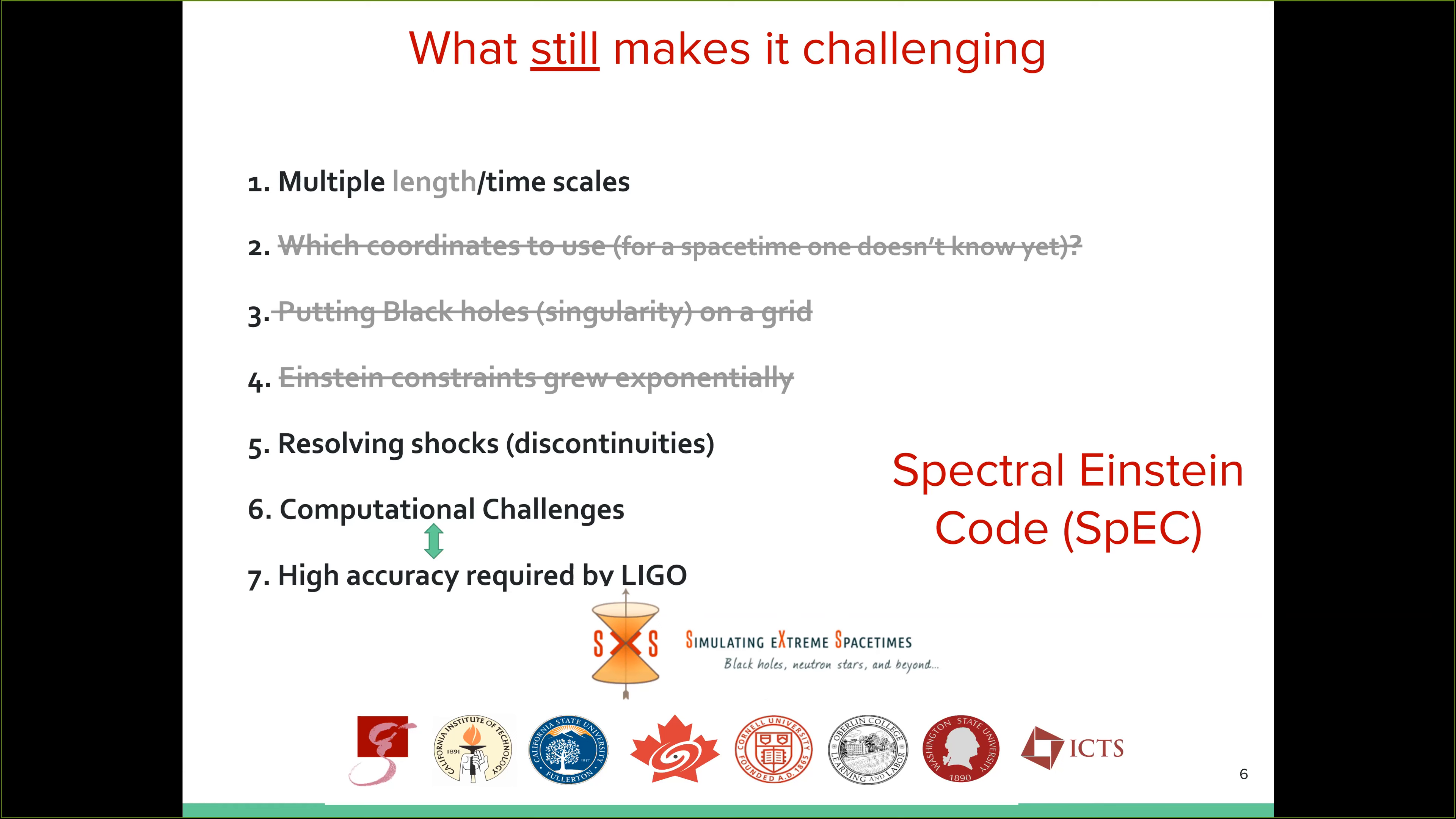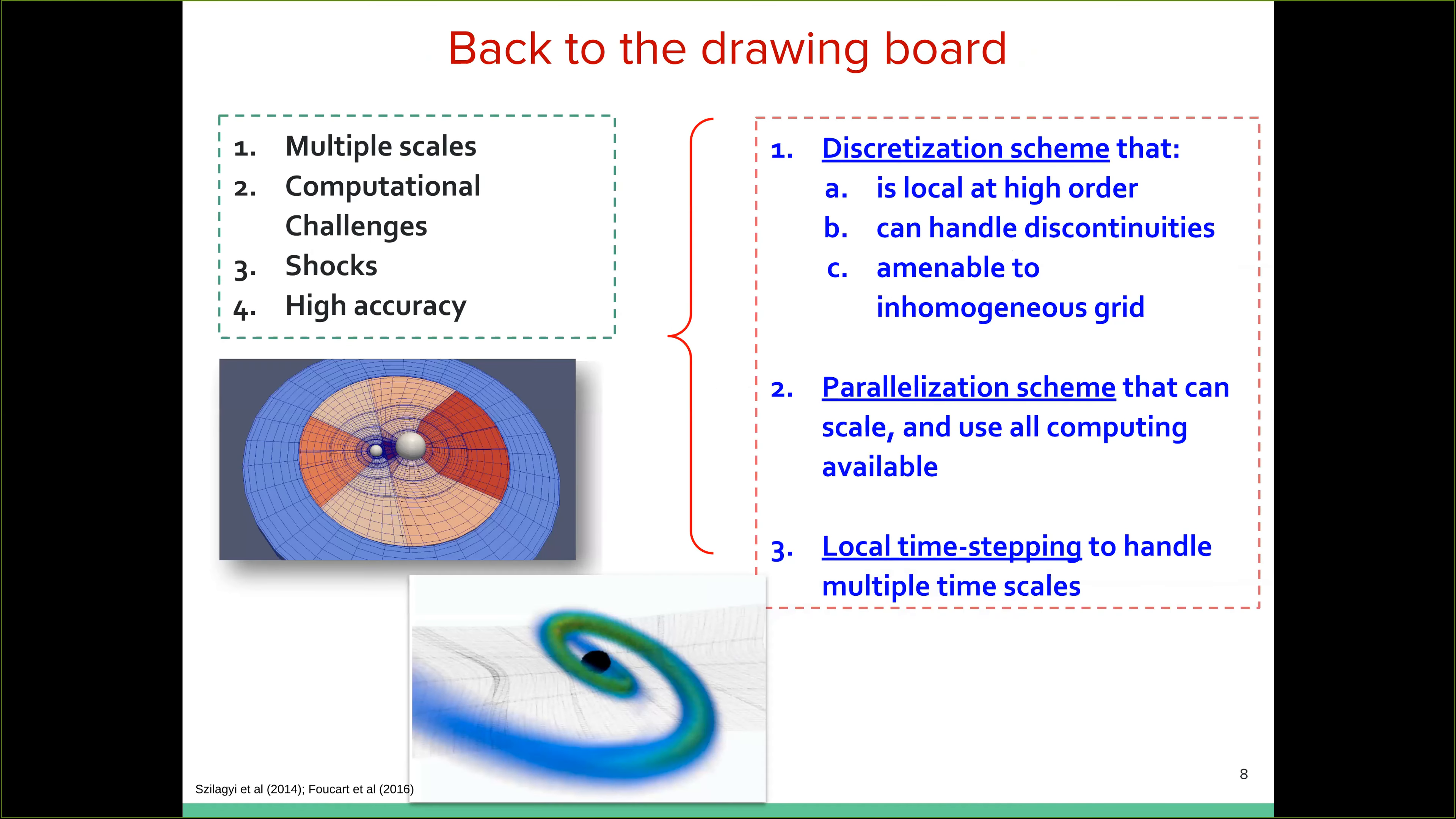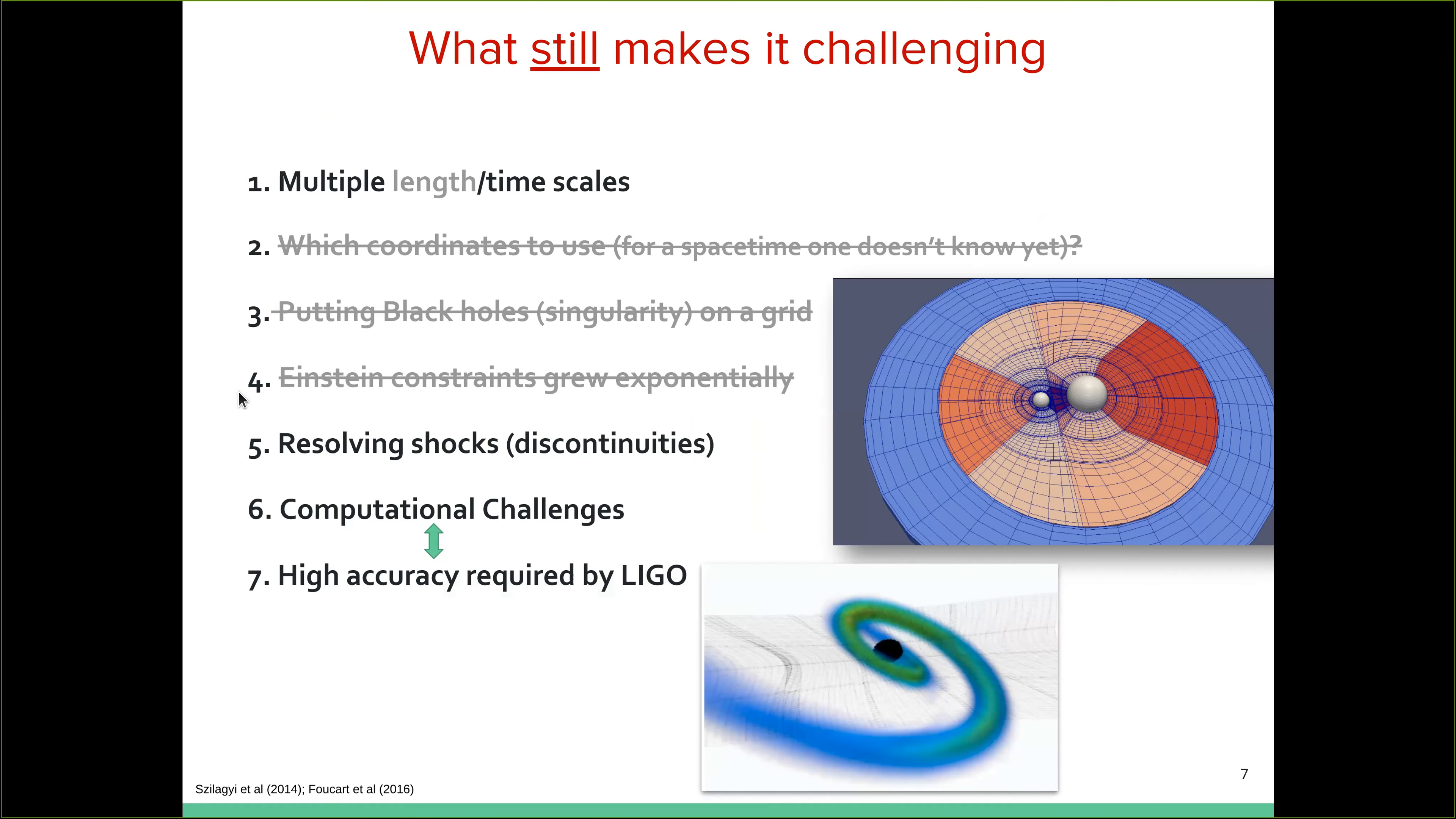And at that point, global time stepping simply makes the simulations crawl at a very slow speed. And I'll talk about why. Again, resolving shocks is something we can do, but not very satisfactorily. And from the first and fifth problem then tie in very deeply into the question of computation challenges and accuracy requirement of course. So what do we do? Right. All the physics part of the questions, physics problems have been somewhat solved. So we went back to the drawing board and we took stock of what was all wrong with SpEC.